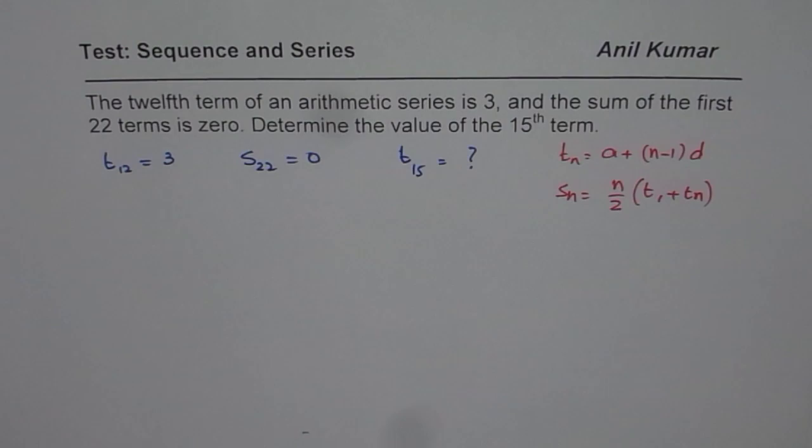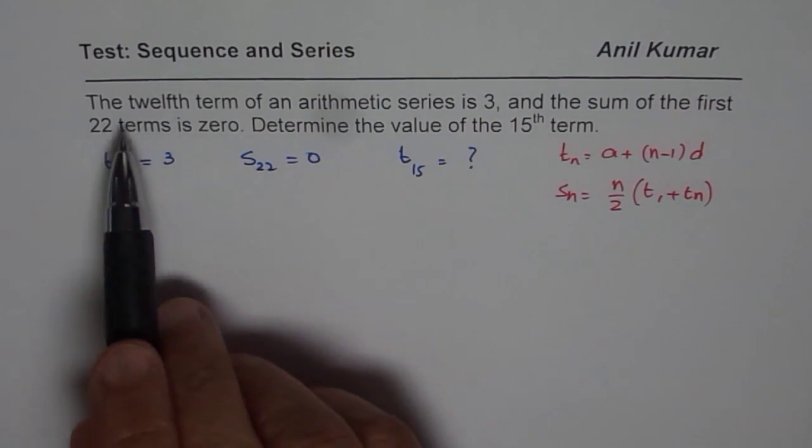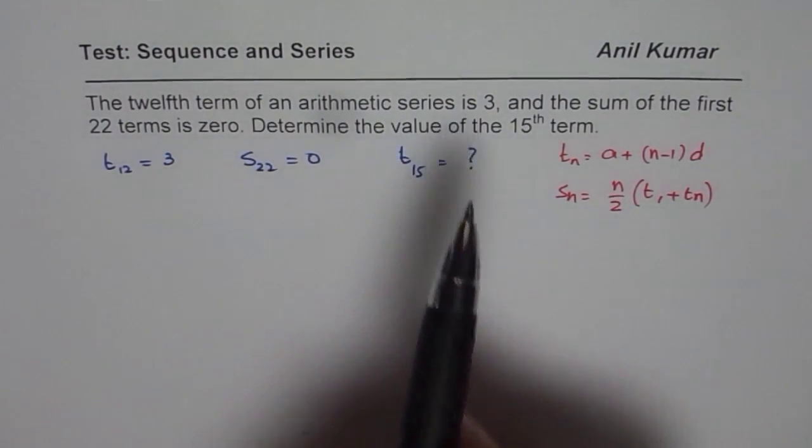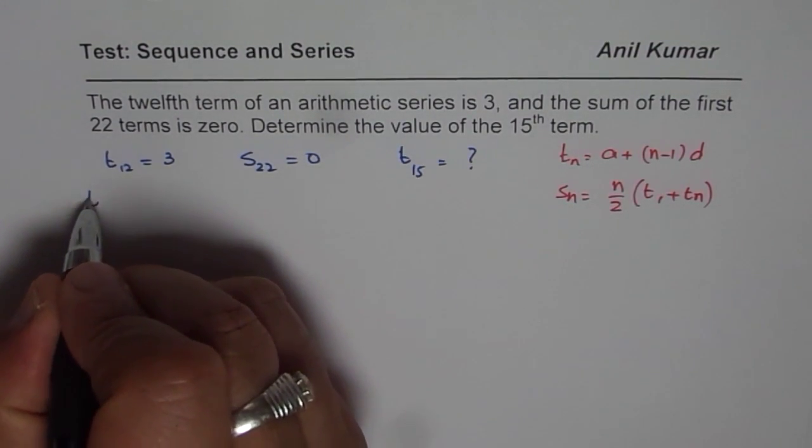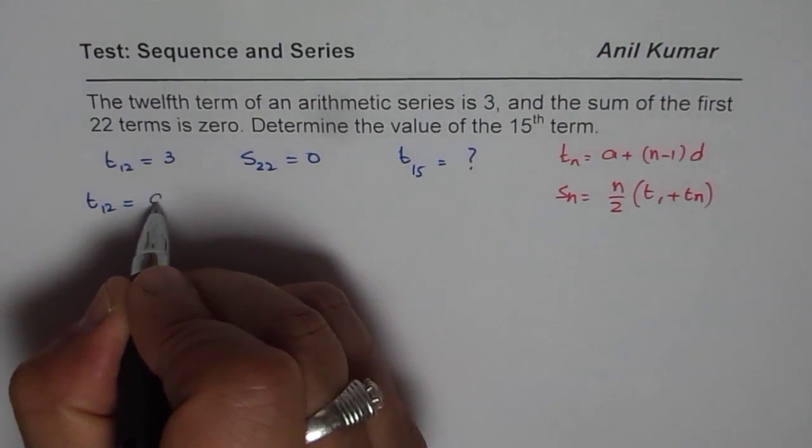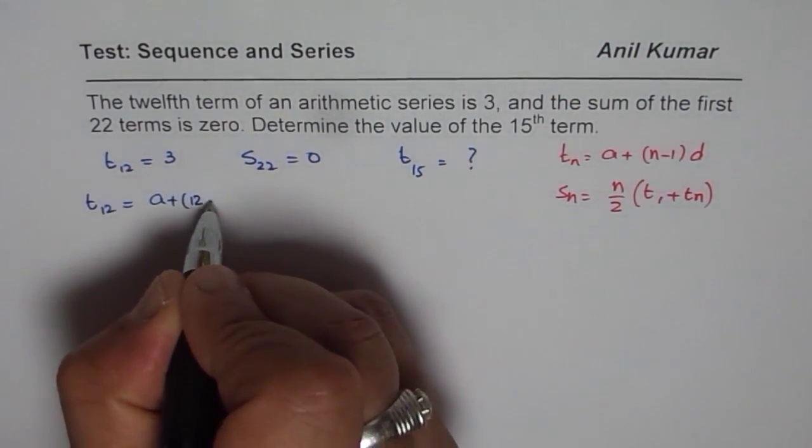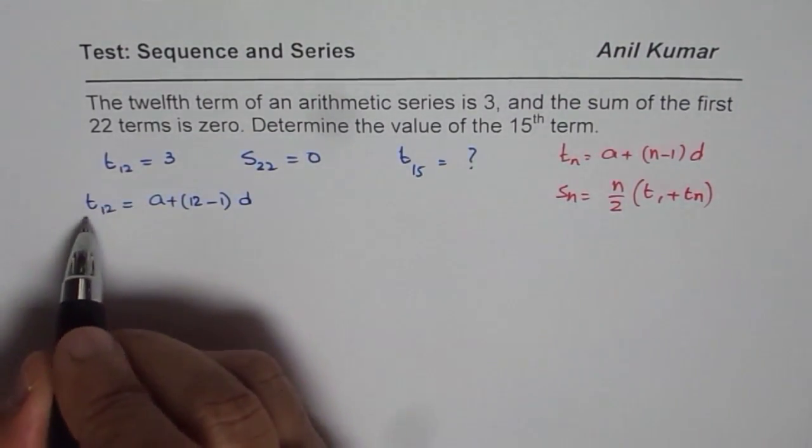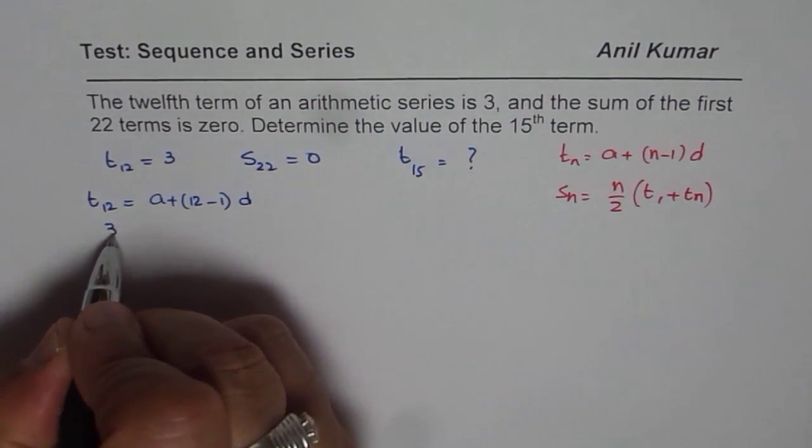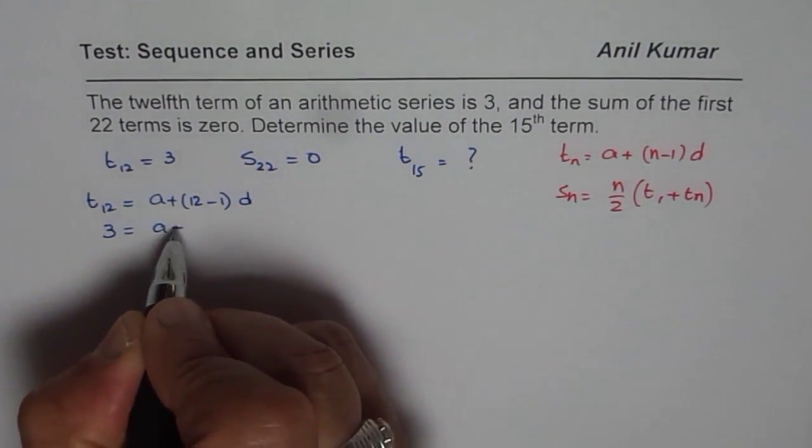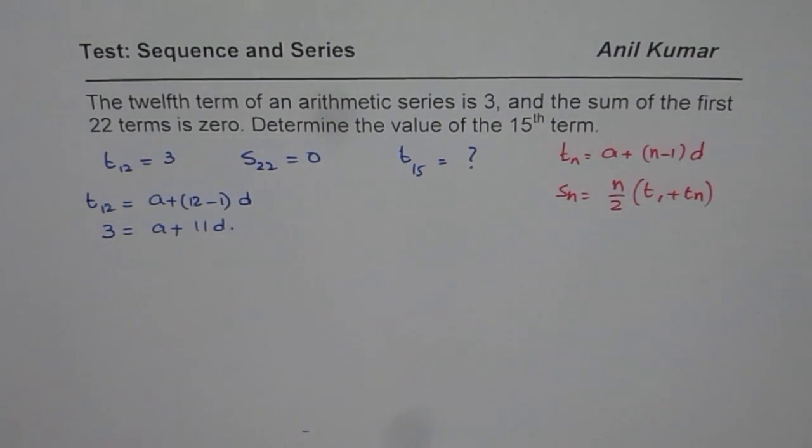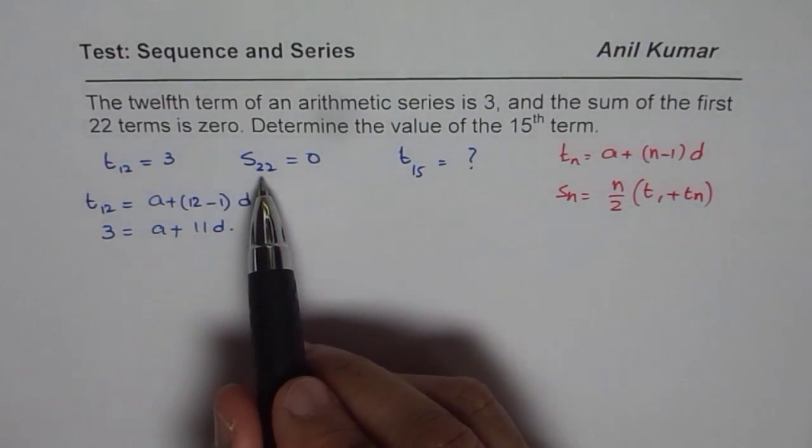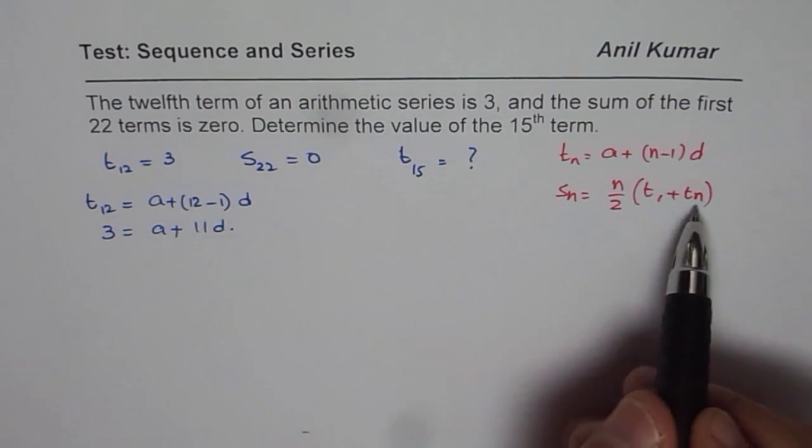Now let us read the question once again. It says 12th term of an arithmetic series is 3. So if I write 12 here, then I get T12 equals A plus 12 minus 1 times D. And we know T12 is 3, so we can write 3 equals A plus 11D. That is the first part. Second part I know is S22. Sum of first 22 terms is 0. And that is the formula.